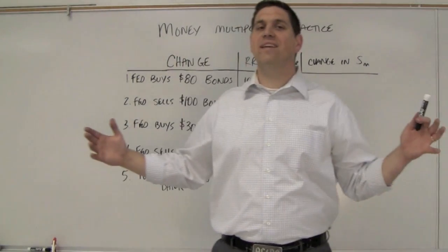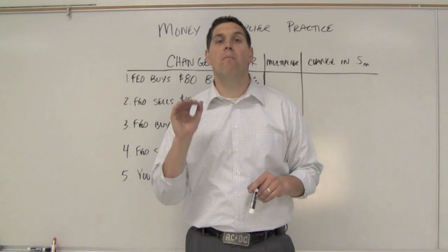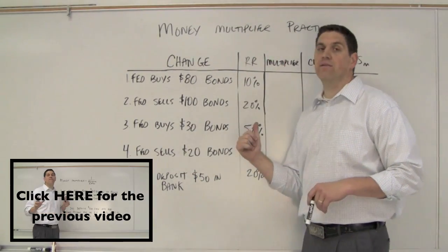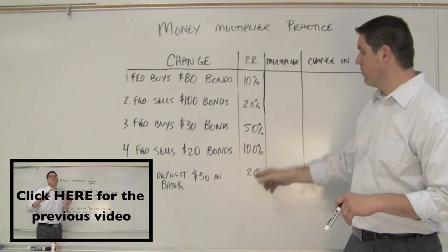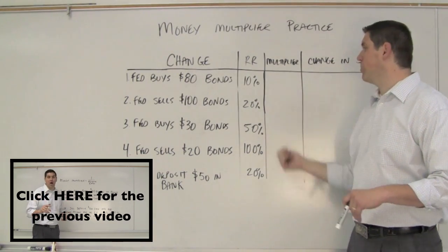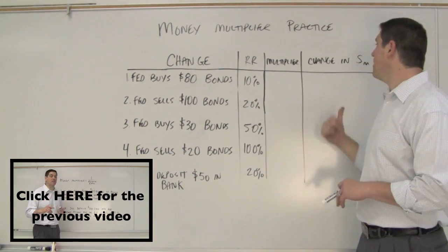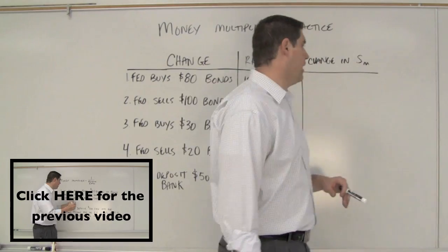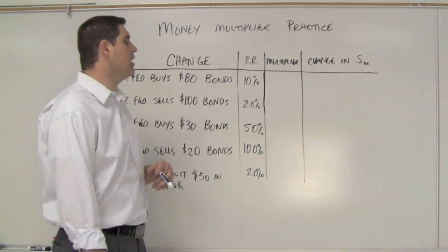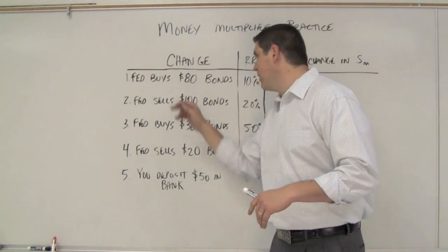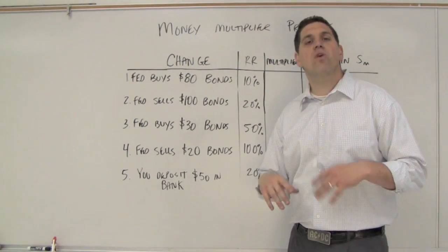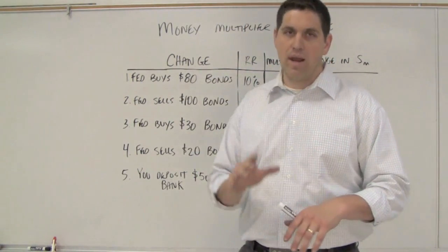Hey, how are you doing? It's Mr. Clifford. This is ACDC Econ. We're talking about the money multiplier. It's time to practice. I have different scenarios with different reserve requirements. Your job is to tell me the multiplier and what the change in money supply will look like - will it increase or decrease and by how much according to these numbers. By the way, the Fed buys a whole lot more than $80 worth of bonds, but we're simplifying it to make sure you understand the concept. Good luck.